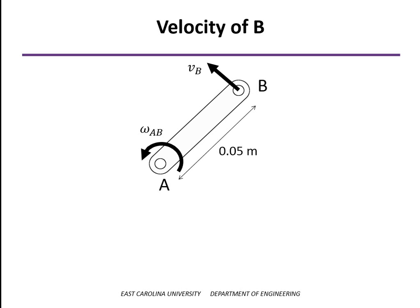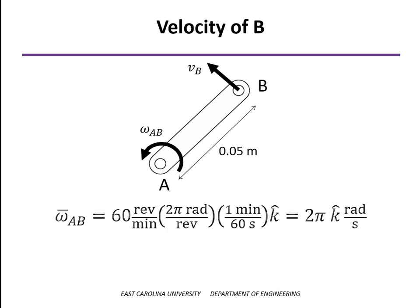Now we're ready to start our velocity analysis. The velocity of point B is easy enough to find because it's on the crank, which is undergoing a rotation about a fixed axis.